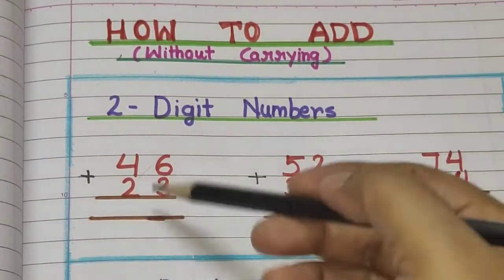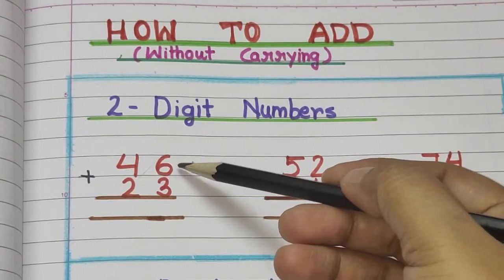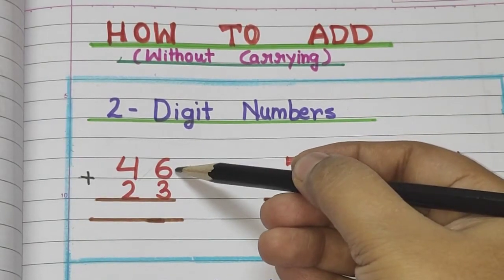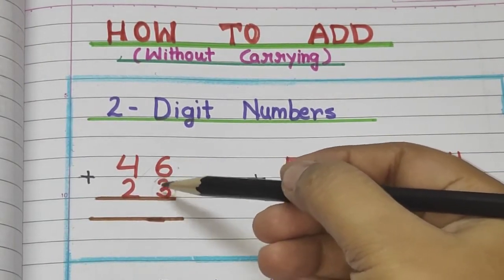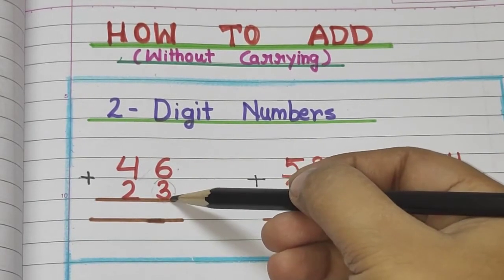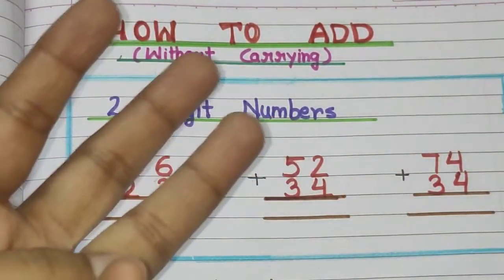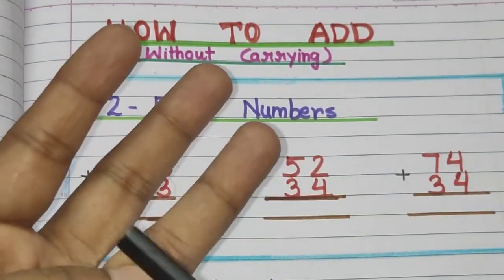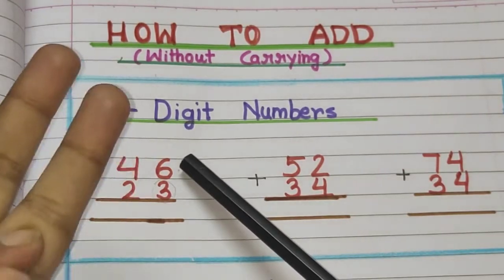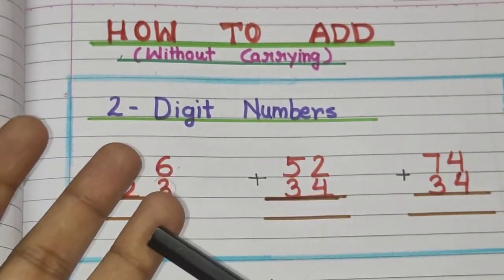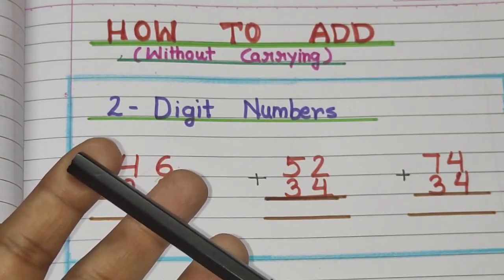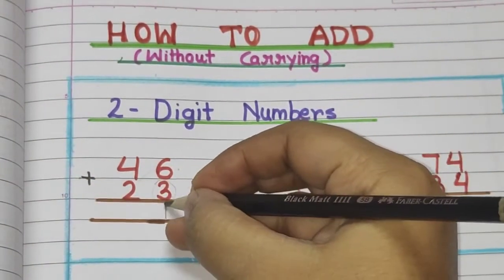In two digit numbers, your first number is six and second number is three. So we have to take the bottom number and raise that many fingers — three fingers. Six ke baad mein: seven, eight, nine. So your answer is nine.